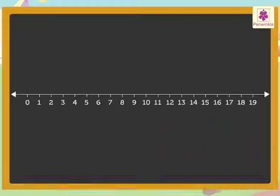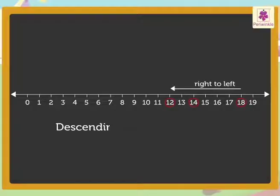Now, let us arrange these numbers in descending order using a number line. On marking the numbers 14, 12, and 18 on the number line and reading it from right to left, we get the descending order as 18, 14, 12.